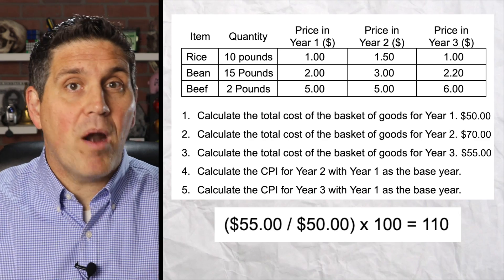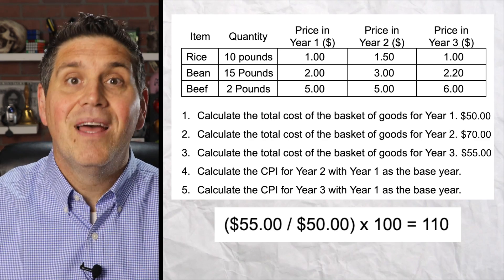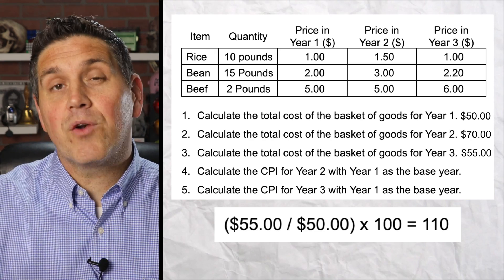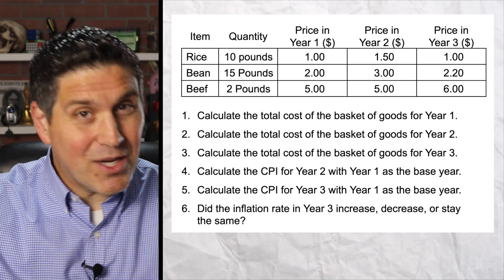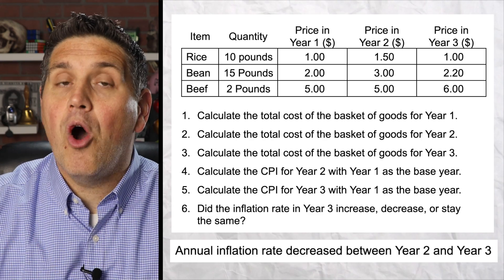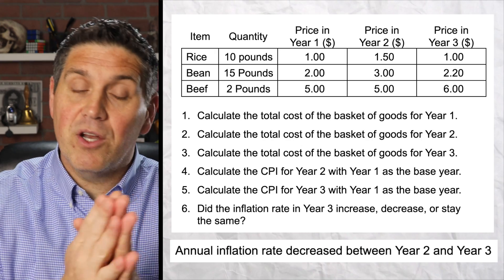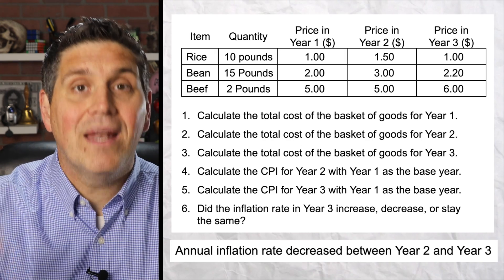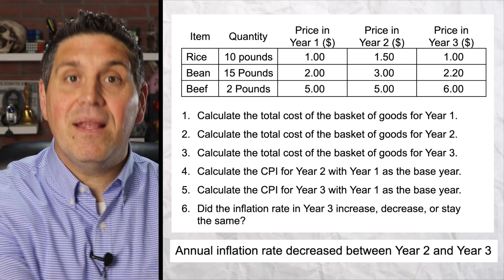For question five, it's the value of the market basket in year three, which is $55 divided by the base year basket of $50 times 100, gives you a CPI of 110. That number tells you prices increased 10% between year one and year three. And that's why I asked you question six — to make sure you understand this concept. Did the inflation rate actually increase for year three? The answer is no, it decreased. Yes, prices increased 10% since the base year, but between year two and year three, prices definitely fell. So the annual inflation rate would decrease. The point is, CPI shows you how prices changed since some base year, while the annual inflation rate tells you how prices changed since the previous year.